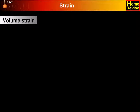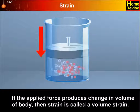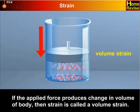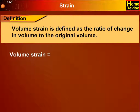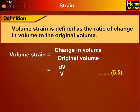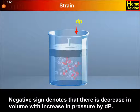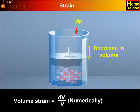Volume strain: if the applied force produces a change in volume of a body, then the strain is called volume strain. Volume strain is defined as the ratio of change in volume to the original volume, equal to −dV upon V. The negative sign denotes a decrease in volume with increase in pressure. Numerically, volume strain equals dV upon V. This is equation 5.6.